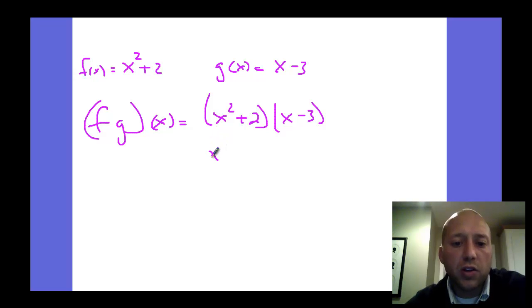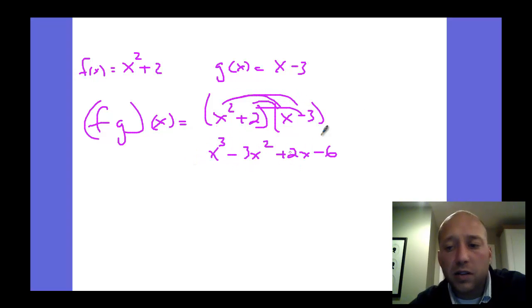But we're still going to do the extended distributive property, so it would be x³ - 3x² + 2x - 6. That would be the answer. I'm just distributing through to both parentheses, and there's no like terms, so that would be it.